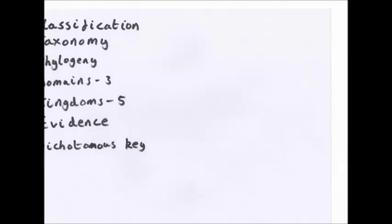In conclusion, classification is the grouping of organisms based on similarities and differences. Taxonomy is the study of classification. Phylogeny is the study of the evolutionary relationships between organisms. There are three domains. Bacteria, archaea and eukaryote. Five kingdoms: prokaryotes, protoctista, fungi, plantae and animalia. All the evidence for the classification is based on four main areas, which is behavior, anatomy, embryos and molecular stuff. And you also need to know how to use the dichotomous key, just a way of deciding what animal is what. So if you're given unknown organisms, you can decide which organism is which.